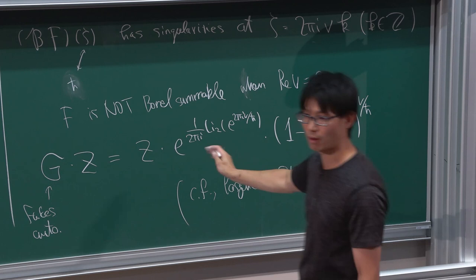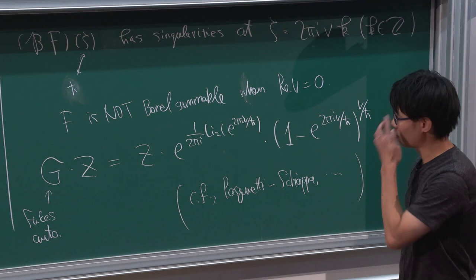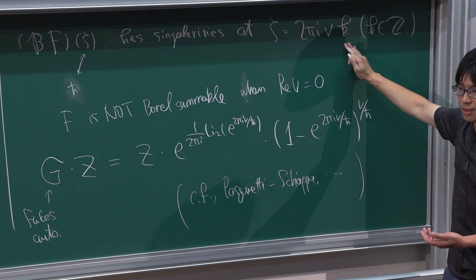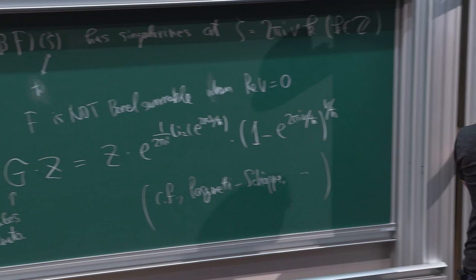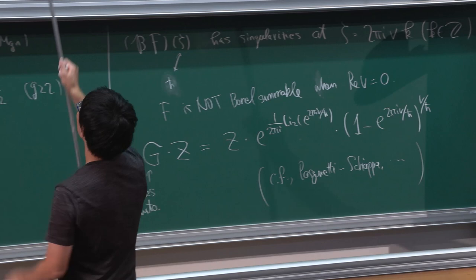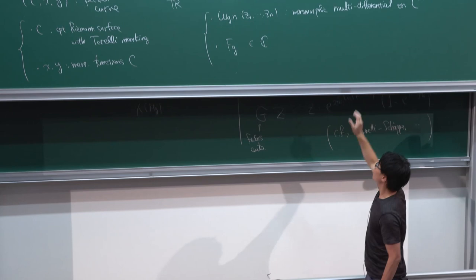From this expression we can analyze the resurgence structure. But in general it is difficult to understand the resurgence structure from just this kind of Stokes jump. What I want to propose is that this kind of Borel singularity is closely related to some period on the spectral curve. This becomes transparent when we discuss the relation between topological recursion and WKB. From now I want to discuss WKB.